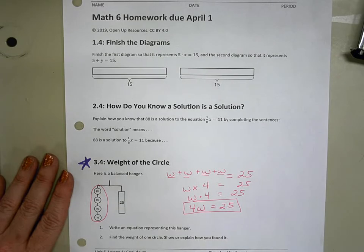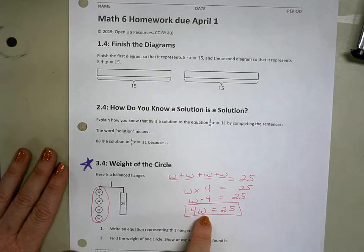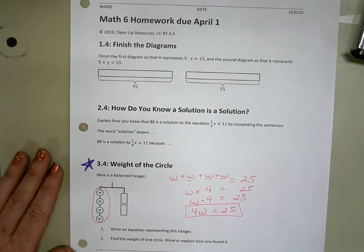Where four is the coefficient, and W is the variable, this unknown number. And when it's smashed together like this, it just means multiply.